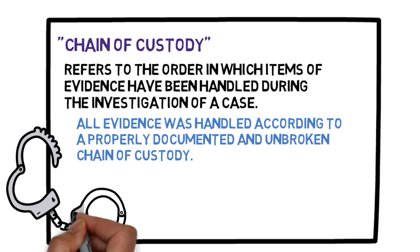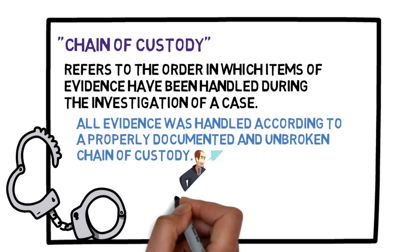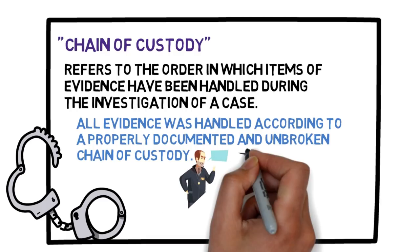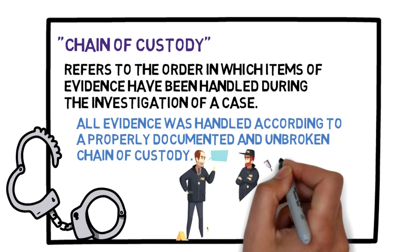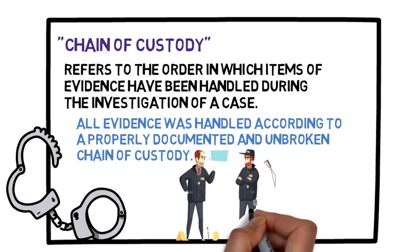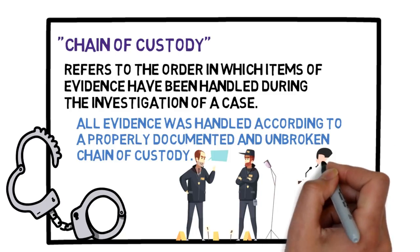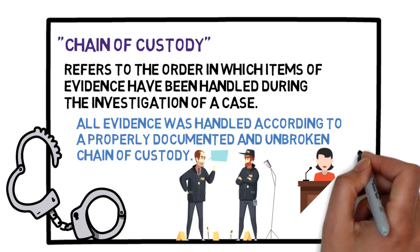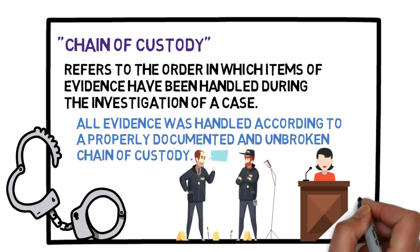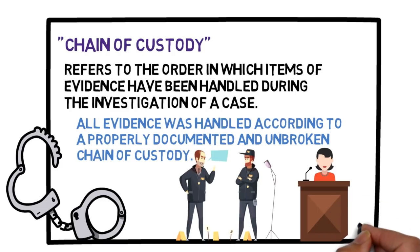Since it is called a chain, there must be links to the chain. The links are the people who actually handled or had custody of the object. Each link must show how he received the object, how he handled it to prevent substitution, and how it was transferred to another. Each must testify to make the foundation complete.